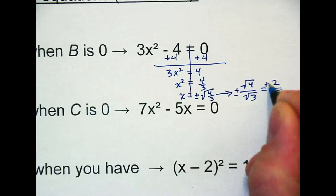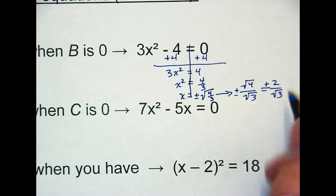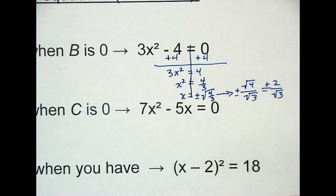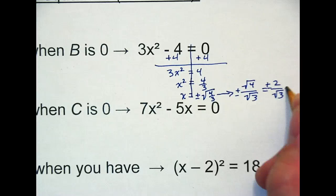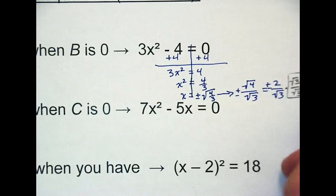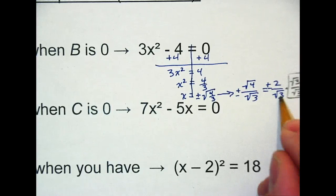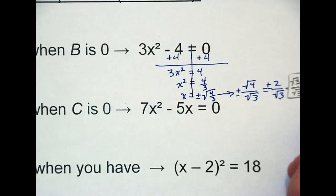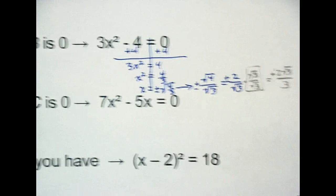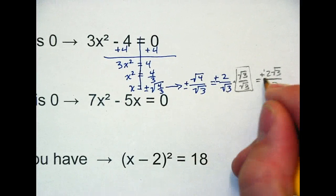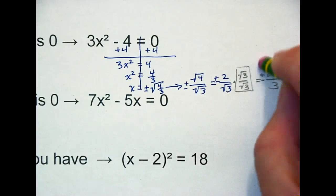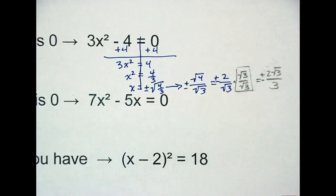So that becomes root 4 over root 3, which root 4 is easy, that's 2 over root 3. Don't drop your plus minus as you're going through this. And then to get that radical out of the denominator, multiply by that special number 1 that we talked about in the past, that number over itself. So it gives you 2 root 3 over 3, and then you have that plus minus.